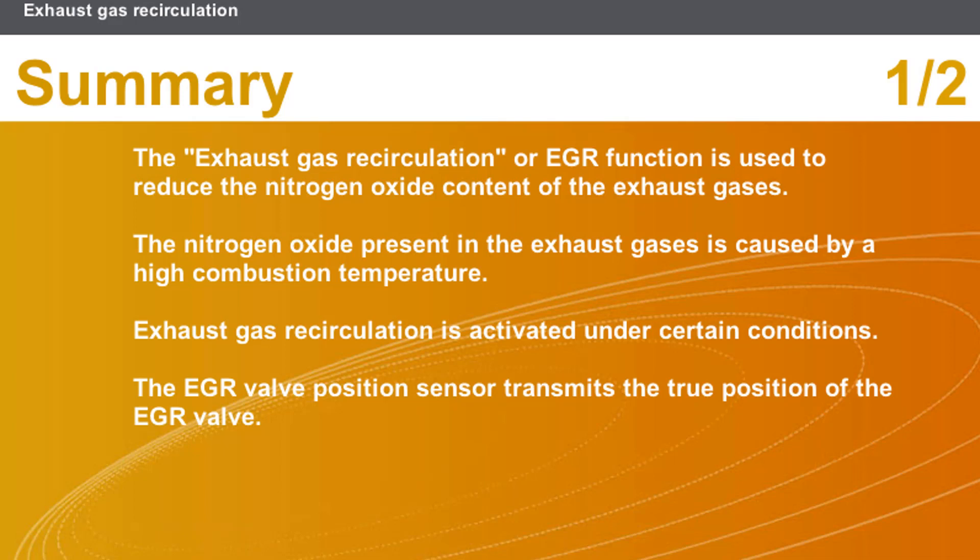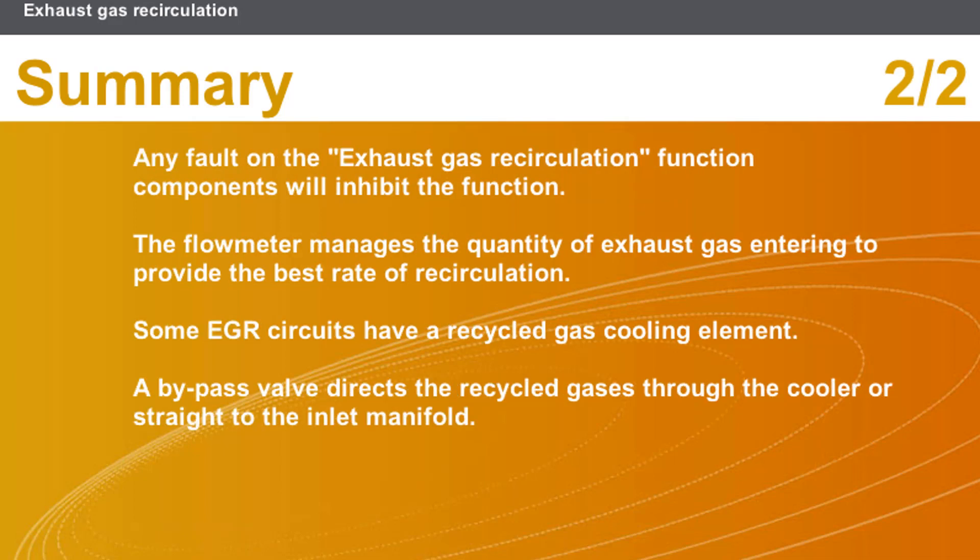In this section we covered the following points: The EGR function is used to reduce the nitrogen oxide content of the exhaust gases. Nitrogen oxide is caused by high combustion temperature. EGR is activated under certain conditions. The EGR valve position sensor transmits the true position of the valve. Any fault on the EGR function components will inhibit the function. The flow meter manages the quantity of exhaust gas for the best recirculation rate. Some EGR circuits have a recycled gas cooling element, and a bypass valve directs gases through the cooler or straight to the inlet manifold.